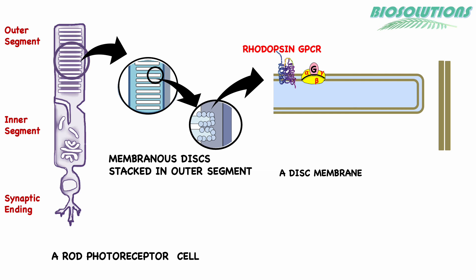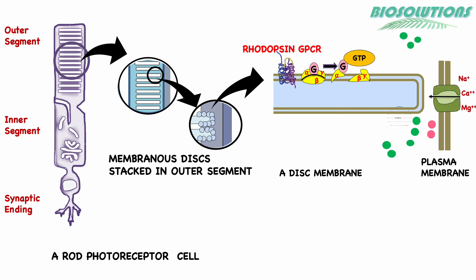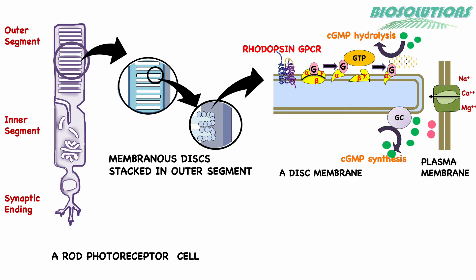Within a picosecond of light activating the visual pigment, a biochemical cascade leads to a decrease in cGMP concentration, closing the sodium channels and leading to hyperpolarization. This signal is passed on to bipolar cells and then to amacrine and ganglion cells. The axons of ganglion cells carry the message to the brain.